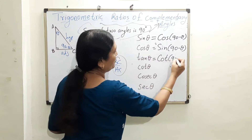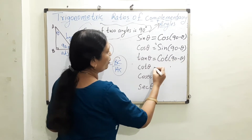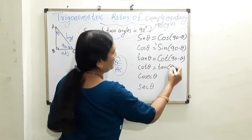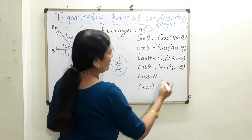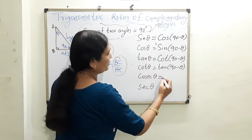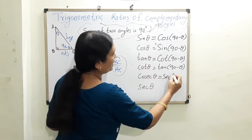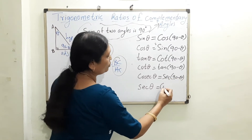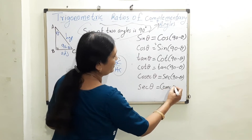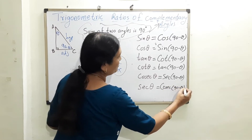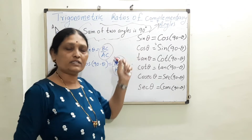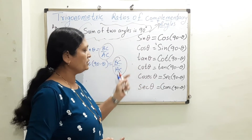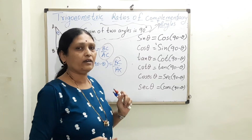Similarly, tan θ = cot(90 − θ), and cot θ = tan(90 − θ). Also, cosec θ = sec(90 − θ) and sec θ = cosec(90 − θ). So to summarize: sin and cos are complements of each other, tan and cot are complements of each other, and cosec and sec are complements of each other.